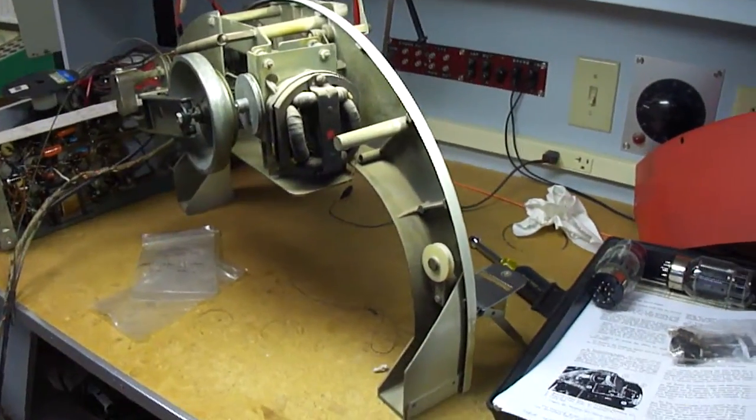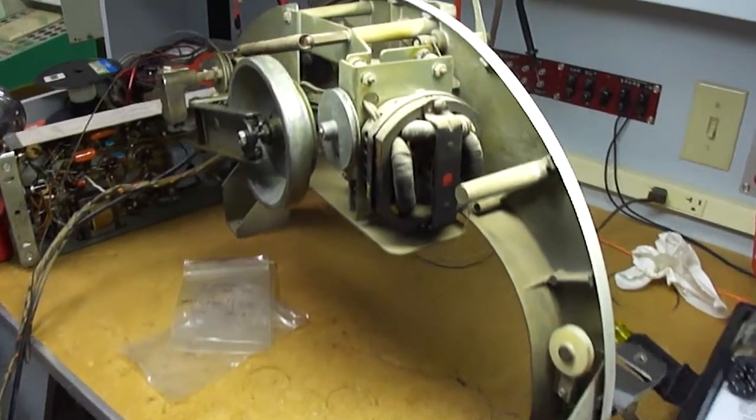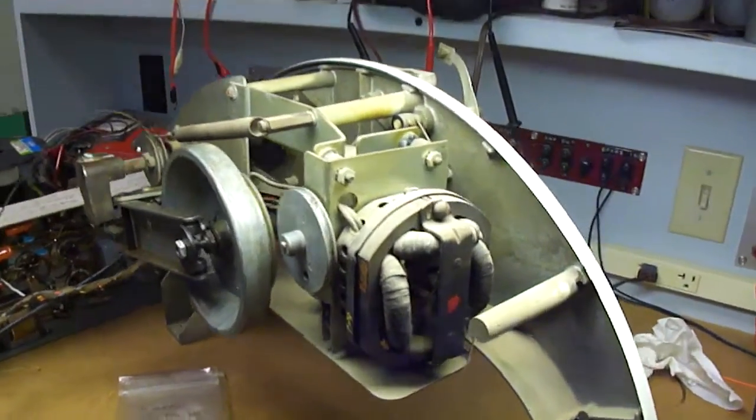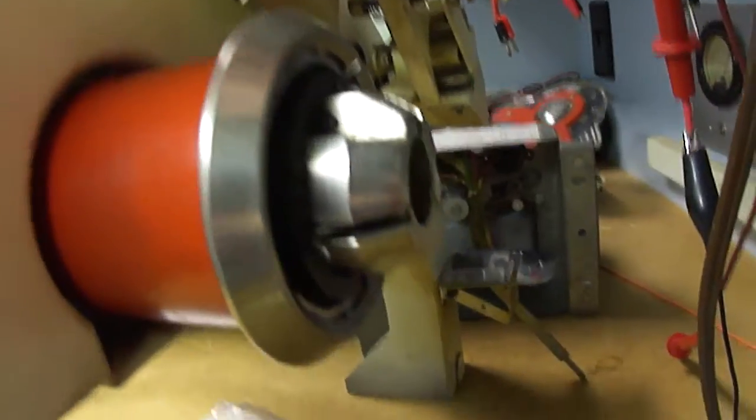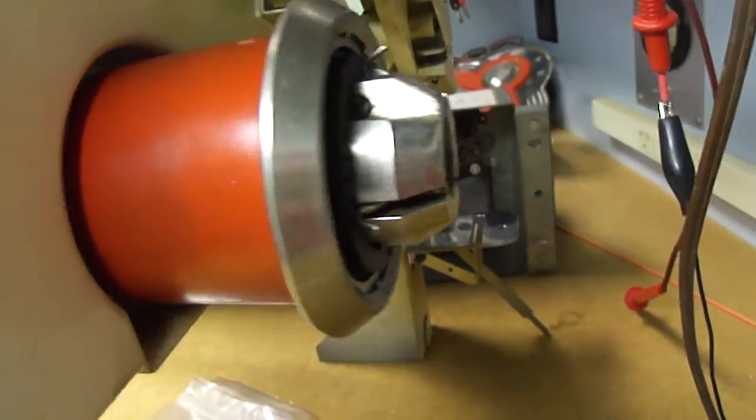This is the removed upper mechanism of the Wurlitzer 1800 Jukebox. The major problem with the mechanism was that the record clamp fingers were not working properly. They weren't engaging the record.